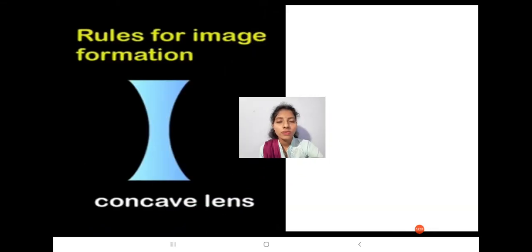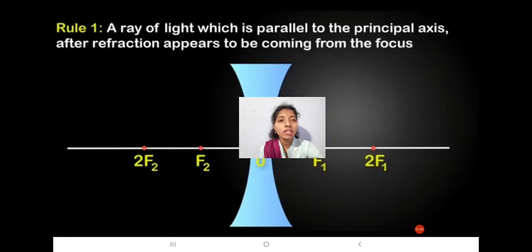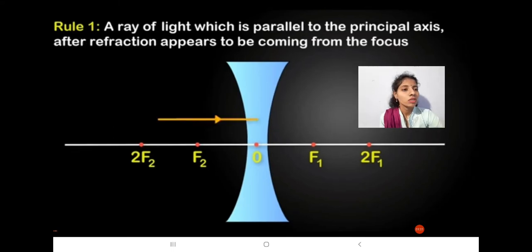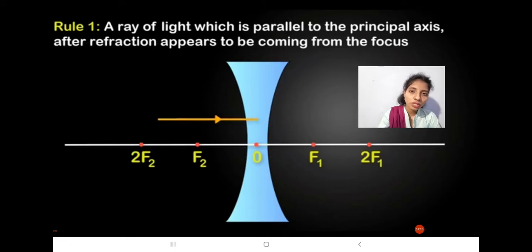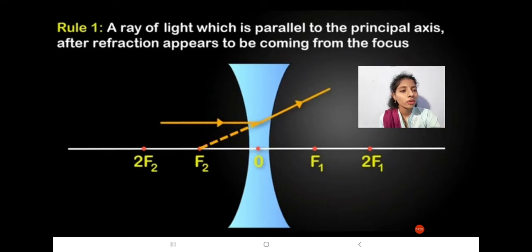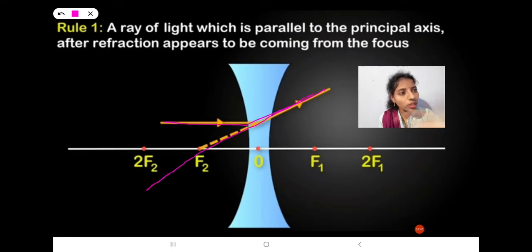Now, rules for image formation of a concave lens. Rule 1: A ray of light which is parallel to the principal axis, after refraction, appears to be coming from the focus. You can see here — the incident ray is parallel to the principal axis, and after refraction it appears to be coming from the focus.